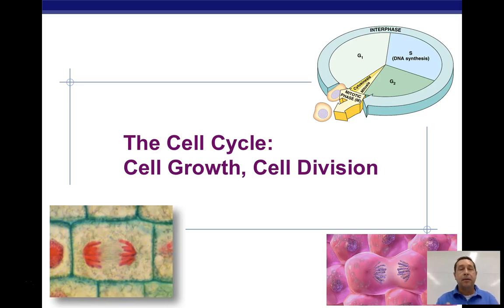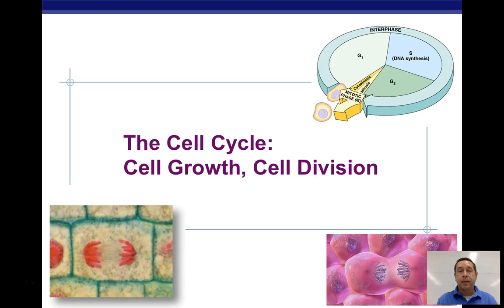In this video we're going to talk about the cell cycle, cell growth, and cell division. There are two ways that cells divide primarily: there is mitosis and meiosis, if we're talking about multicellular things, and some single cells that use mitosis. And then there's binary fission, which is used by bacteria.